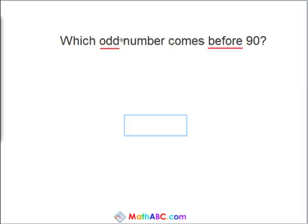All right, now which odd number comes before 90? So you have 90. I'm going to go before, so let's subtract 1. We get 89. And there you have it. 89 is an odd number. So that is the next one, 89.